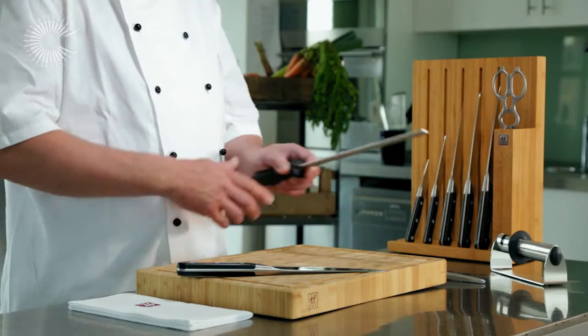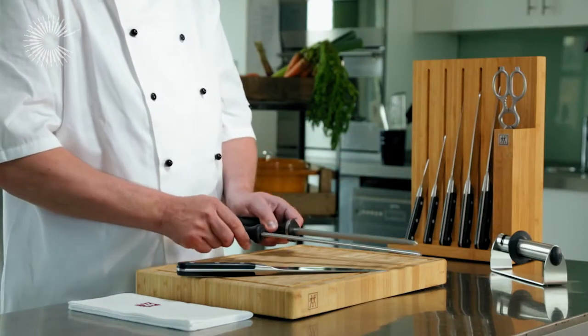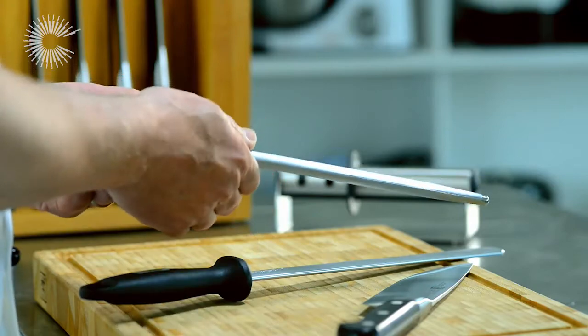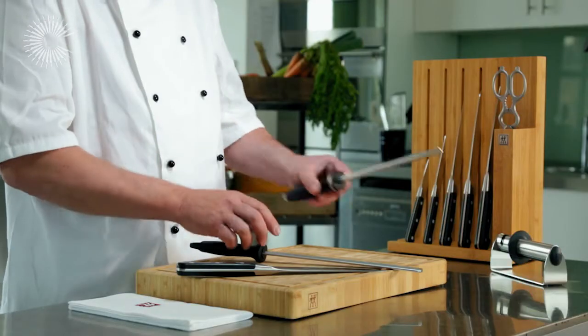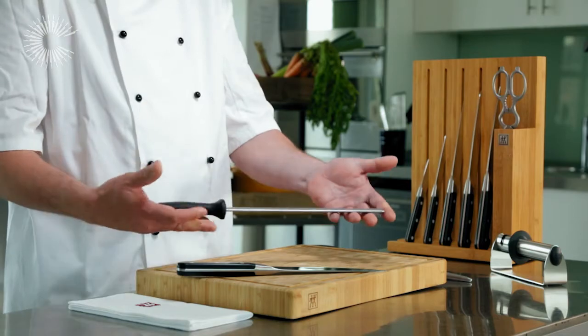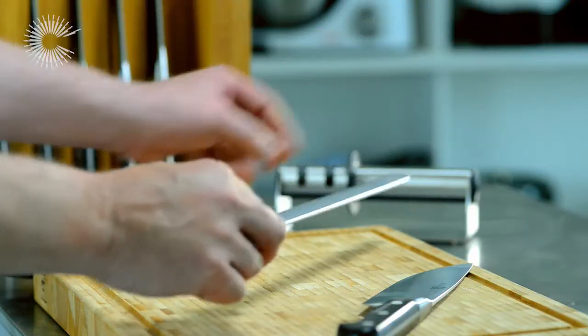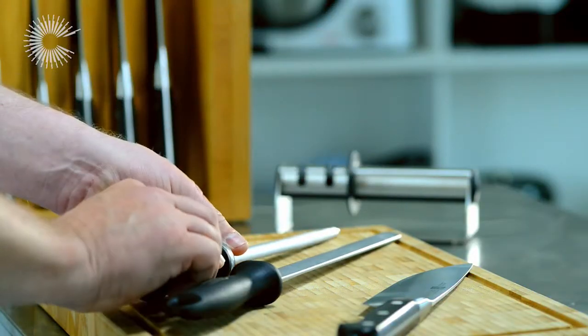For sharpening knives, I'm going to be using two steels. Your honing steel will maintain the edge. Your sharpening steel is a diamond steel. So for sharpening, a diamond steel; for maintenance, a honing steel.